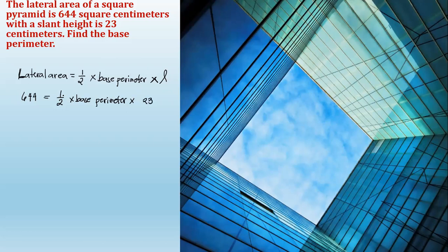Now, get the reciprocal of this one-half. It will become 644 times two over one. And then, 644 divided by 23 — which is the slant height — equals the base perimeter.